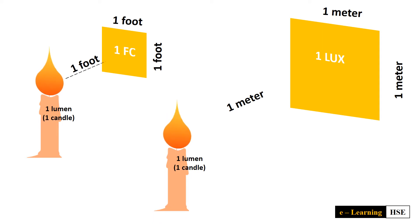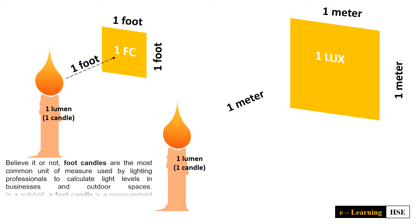Believe it or not, foot candles are the most common unit of measure used by lighting professionals to calculate light levels in businesses and outdoor spaces. In a nutshell, a foot candle is a measurement of light intensity and is defined as the illuminance on a one square foot surface from a uniform source of light.